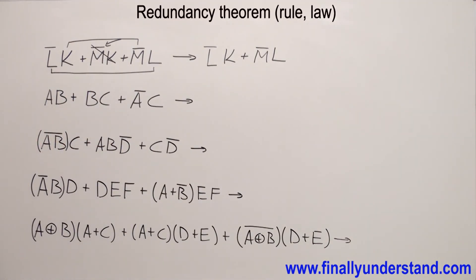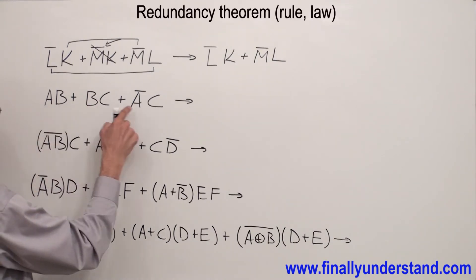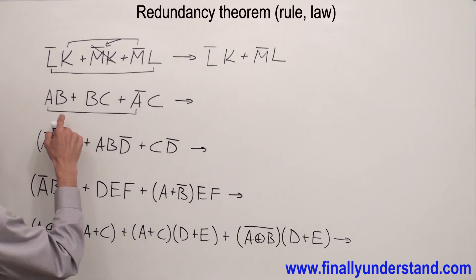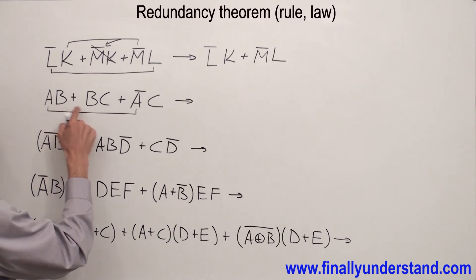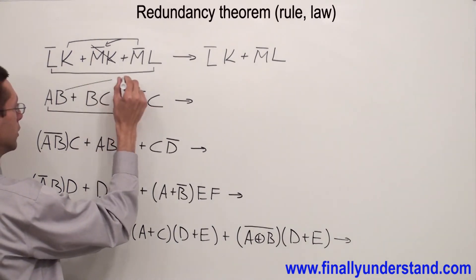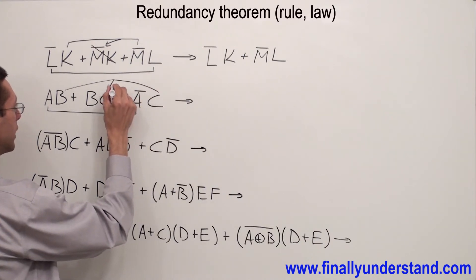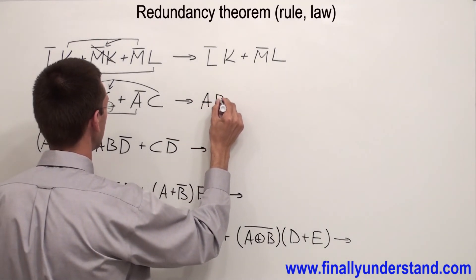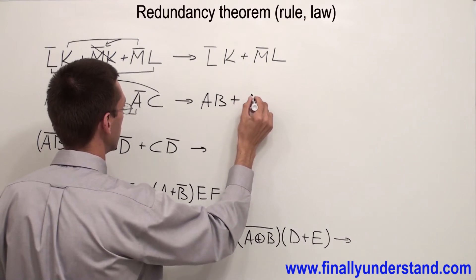Let's take a look at the second example. Someone can try to factorize, but factoring is not going to give you too much. So if you cannot factorize, you can always try to apply the redundancy theorem. I have complements — I have A and A0. Next I have to check what I have multiplied to my complements. I have B and I have C. So these two variables create an extra term in my expression, that's why this term has to be cancelled out. My answer is AB or A0C.